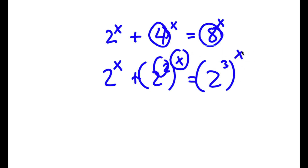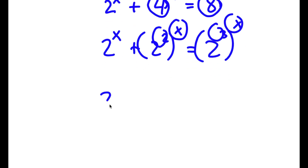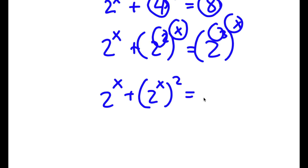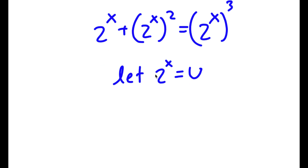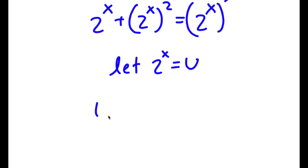I can switch the places of these two exponents. So now I get 2 to the power of x plus 2 to the power of x to the power of 2 is equal to 2 to the power of x to the power of 3. Now I can let 2 to the power of x equal to the variable u. So if I replace 2 to the power of x with u, I get u plus u squared is equal to u to the power of 3.